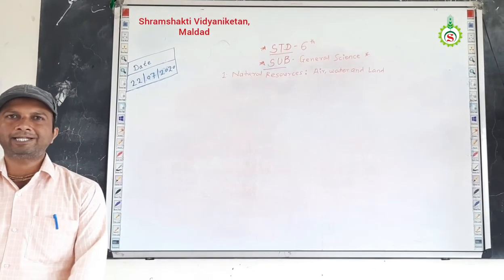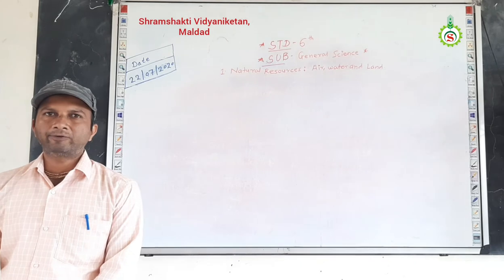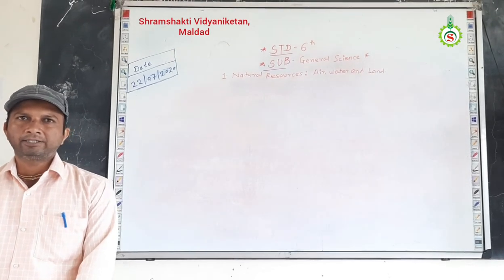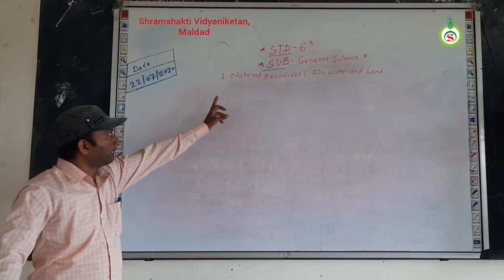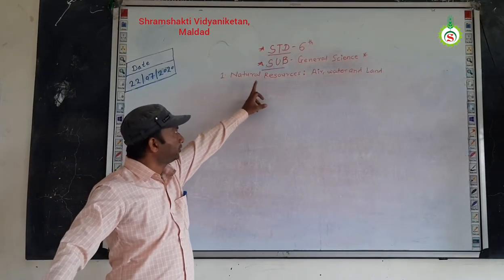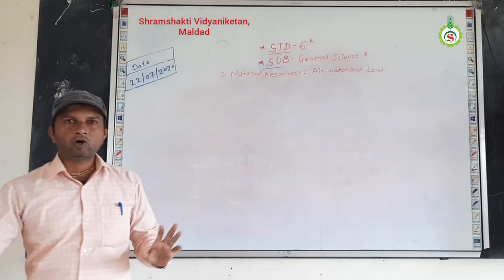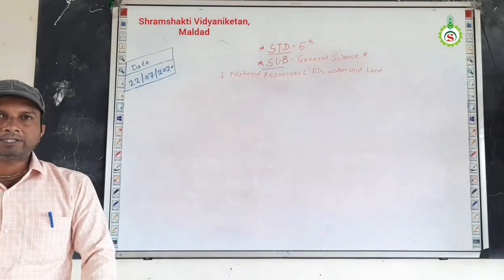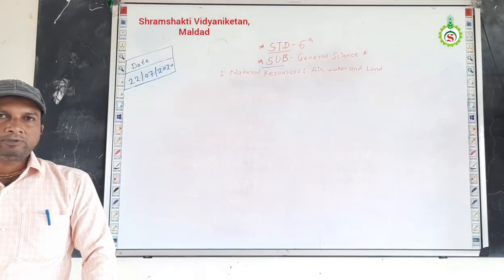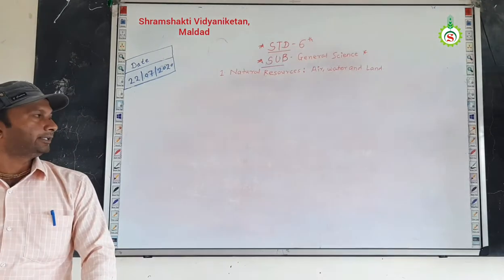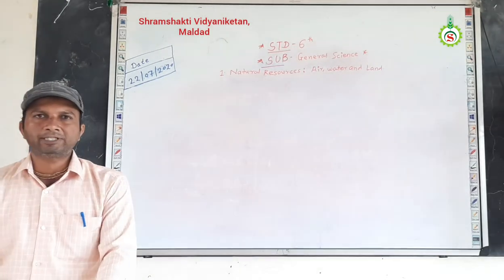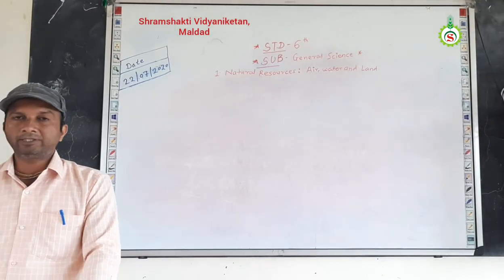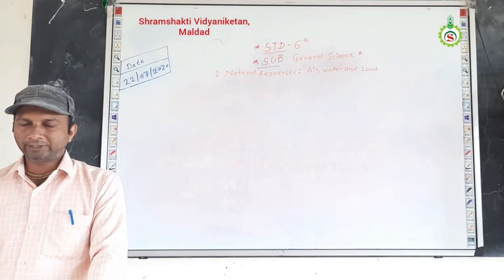In the last lecture, we discussed some information regarding natural resources. Our Chapter 9, Natural Resources: Air, Water, and Land. We have already studied the two natural resources, that is, air and water, and we also covered some information regarding natural resources, that is, land. Today we are going to learn more information about natural resources, that is, land.